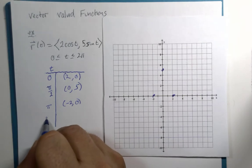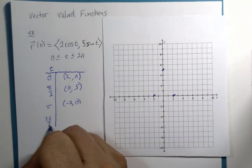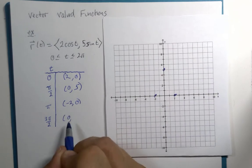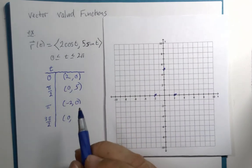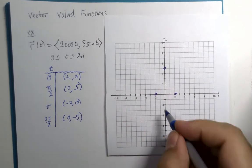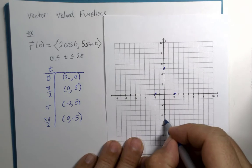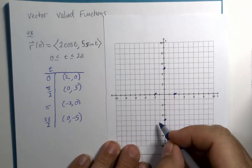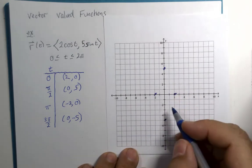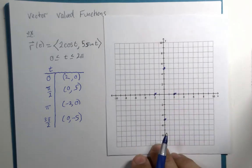If T is 3 pi over 2, cosine of that happens to be 0 and the sine of 3 pi over 2 is negative 1, that will be negative 5. And hold on a second, 0, negative 5 is here. This is no parabola anymore. I got 1, 2, 3, 4 dots laid out in kind of a diamond pattern.